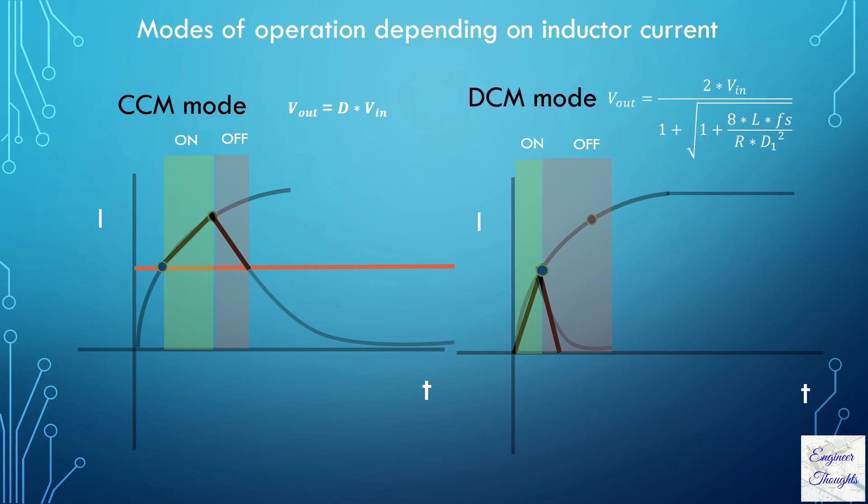Here, the output voltage relationship can be seen as follows, where it not only depends on the duty cycle but also depends on various parameters such as inductor value, frequency, and load resistance.